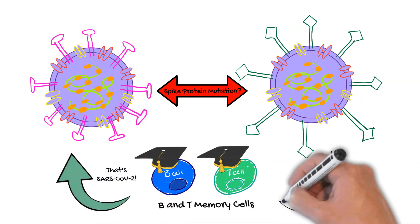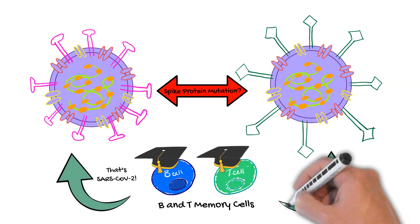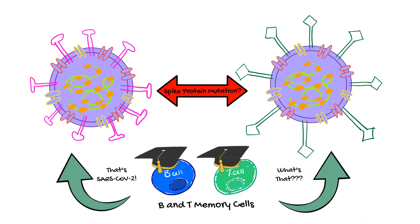The reason we're following these variants is because we have to know at what point, hopefully never, the spike protein will look different and not be recognized by our immune system. That's why variants matter.